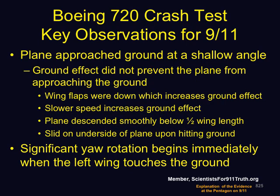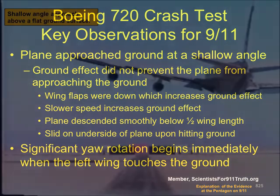This crash test has some key points of relevance for discussion of 9-11. First, the plane approached the ground at a shallow angle. Ground effect did not prevent the plane from approaching the ground. Wing flaps were down, which increased ground effect. Slower speed also increases ground effect. But the plane descended smoothly below a half-wing length and slid on the underside of the plane upon hitting the ground. Significant yaw rotation began immediately when the left wing touched the ground, which is relevant to our earlier discussion of yaw rotation when the right engine hit the generator trailer at the Pentagon on 9-11.